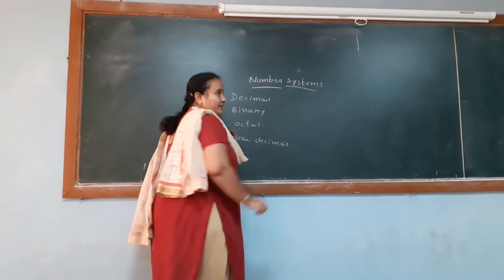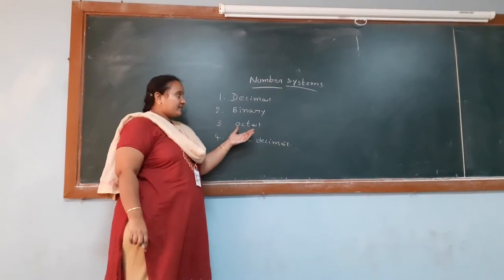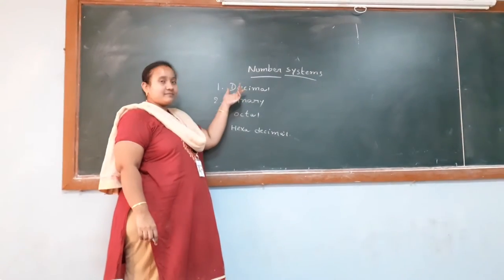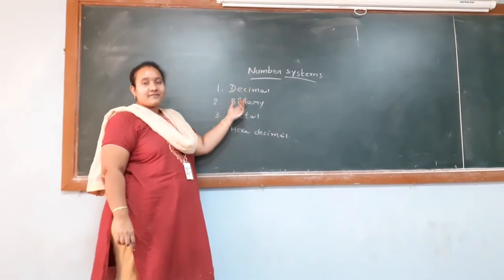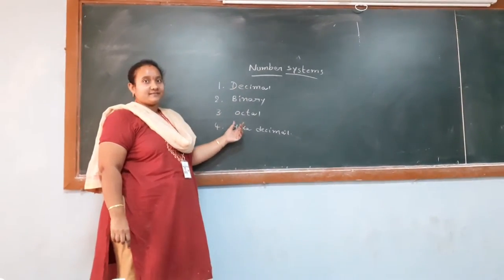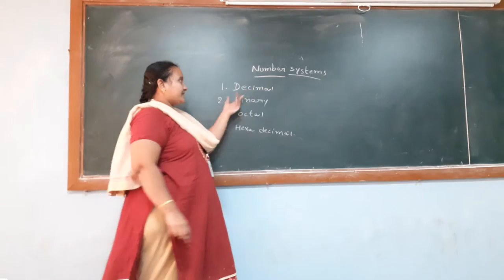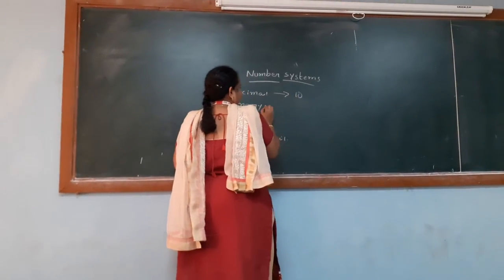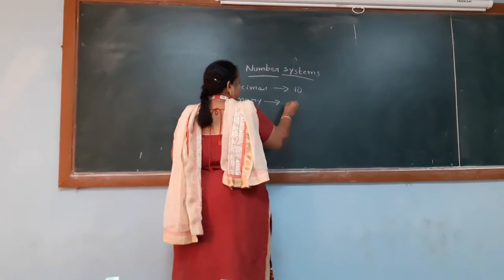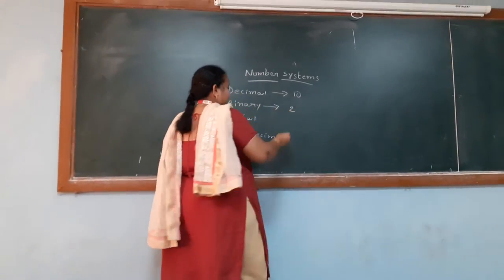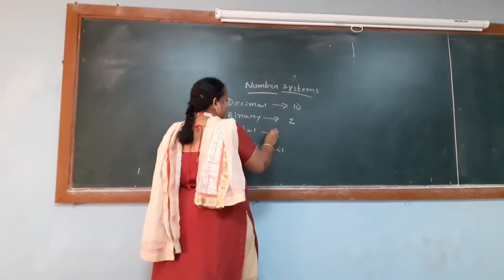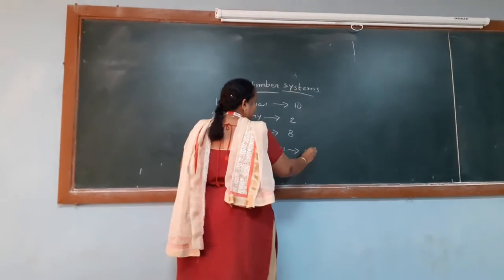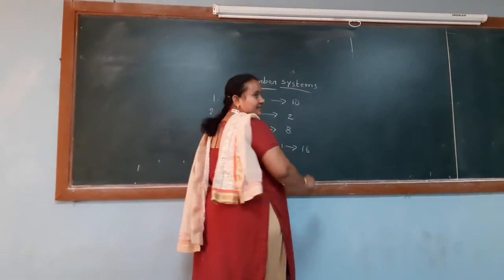Before going to conversions, first we should know about the base of each number system. For decimal, the base is 10. For binary, the base is 2. For octal, the base is 8. And for hexadecimal, the base is 16.